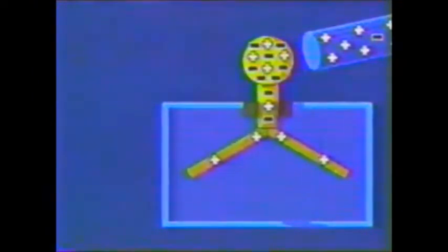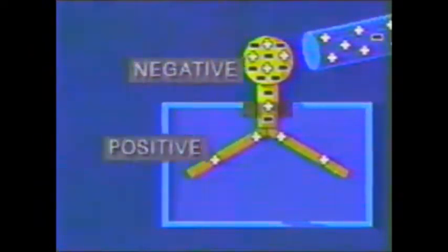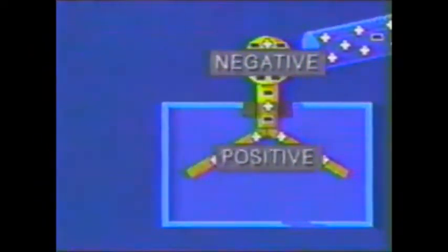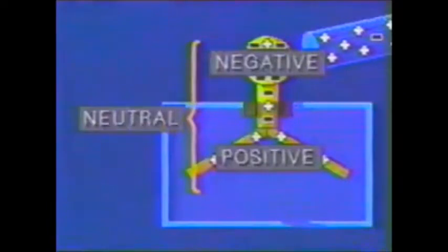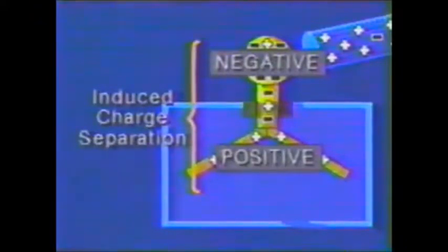If we look at the electroscope as a whole, we find that the top is negatively charged, and the bottom is positively charged. Since no charge has been transferred, the electroscope as a whole is still neutral. It has, however, experienced induced charge separation.